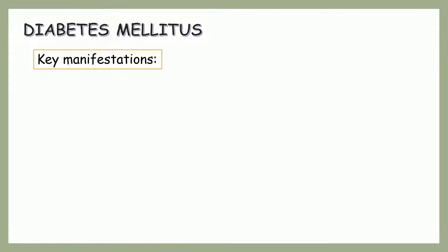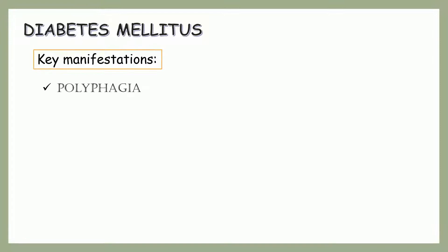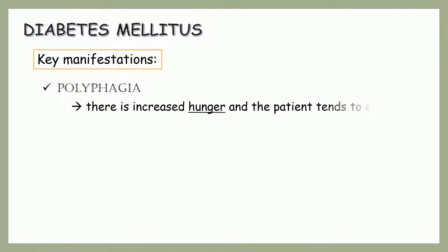Let's now proceed to the key manifestations, which are the 3Ps. First we have polyphagia. It means there is increased hunger and the patient tends to eat more. This occurs because the food that we take, which is being converted to glucose, was not able to enter the cell due to the problem with insulin. So the glucose will stay in the bloodstream and cell starvation occurs.